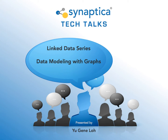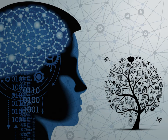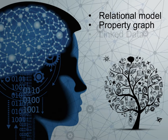Hello everyone. Today we will explore data modeling in RDF using linked data principles and compare the exercise against a traditional relational database as well as a different type of graph database known as a property graph database. We're going to be covering practical aspects by showing examples of how a similar dataset may be modeled in MySQL, Neo4j, and GraphDB — one of many good RDF triple stores out there.